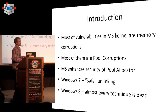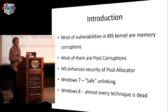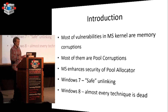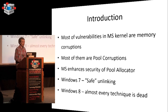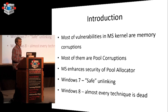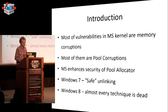I did some statistical research. From 2008, most local privilege escalation vulnerabilities in the Microsoft kernel are memory corruptions — mostly pool corruptions, with just a few stack overflows. That's why Microsoft enhanced the security of the pool allocator starting from Windows 7, because until Windows 7 the pool allocator was pretty vulnerable to easy attacks. In Windows 8, the pool allocator is kind of bulletproof, but there are still attacks.